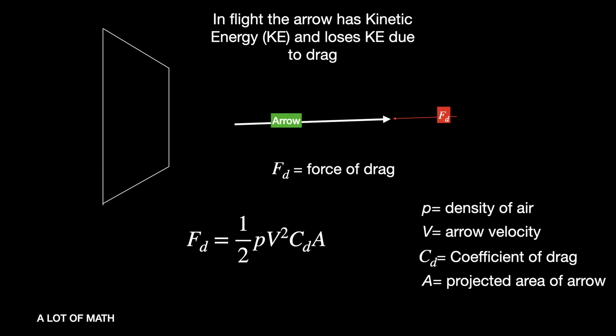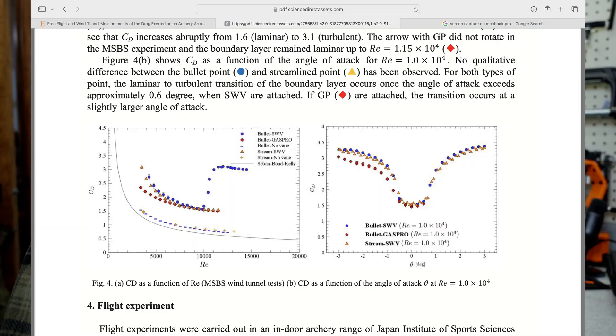The formula, which you see here — we're going to explain some of these terms. Density is just the air density. V is the arrow's velocity, and then there's the coefficient of drag. This is an experimentally determined number, typically from wind tunnel tests and things of that nature. I was actually able to find a Japanese study, and that's where I got my coefficient of drag from.